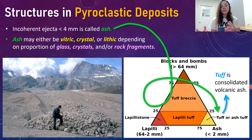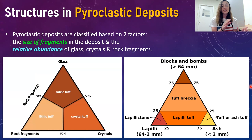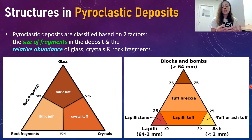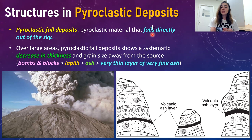Now moving from the size-based ternary diagram into the composition spectrum using the terms vitric, crystal, and lithic. Looking at this ternary diagram, the relative abundance of glass, crystals, and rock fragments can be used to further describe a pyroclastic deposit. If it's mostly glass it's vitric, if it's mostly rock fragments it's lithic, and if it's mostly crystals it's crystal.